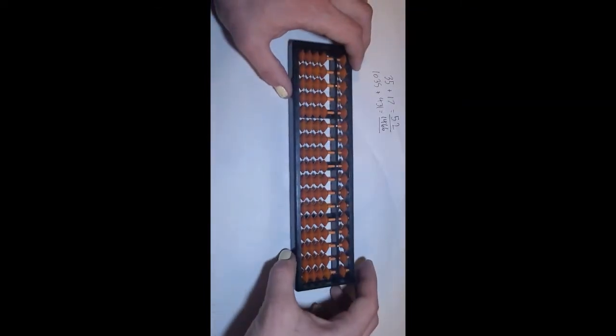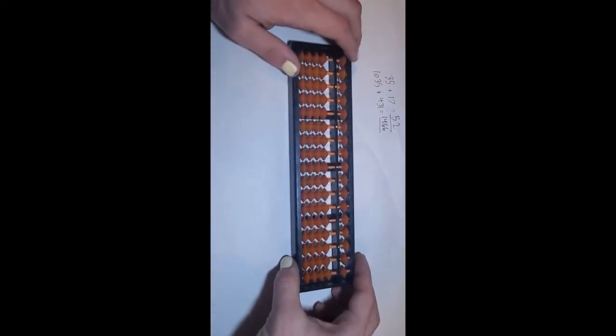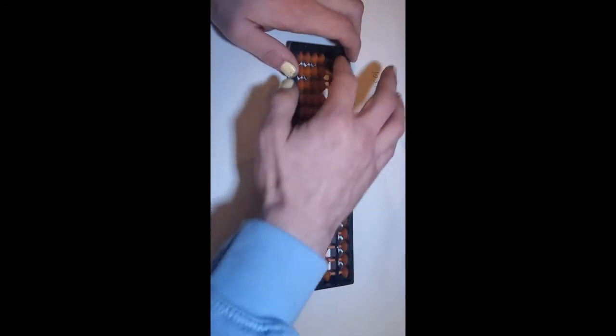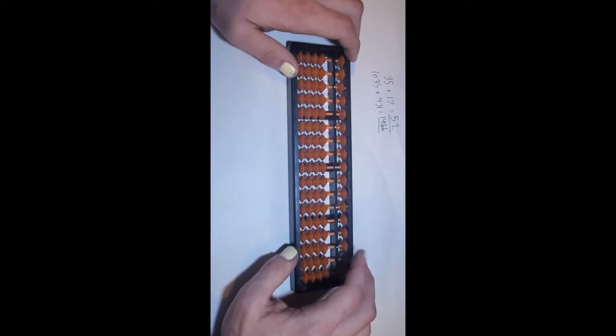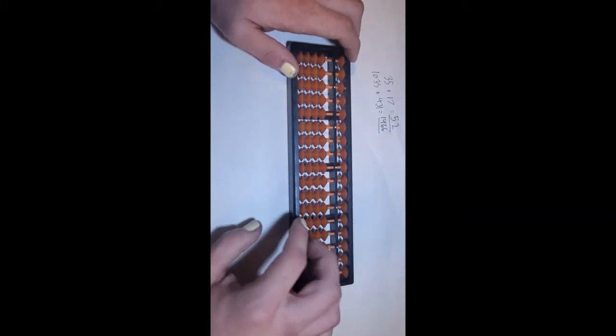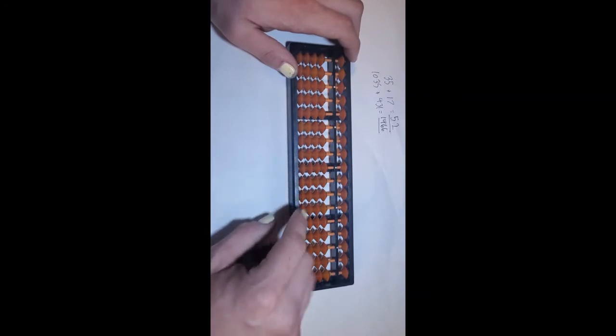Okay, so we can first start by doing some simple addition. And one thing you have to know before you can add or subtract on this, or do any sort of math, is that the Heaven counters count as five. Each one of these beads in Heaven counts as five. And the Earth counters count as one.